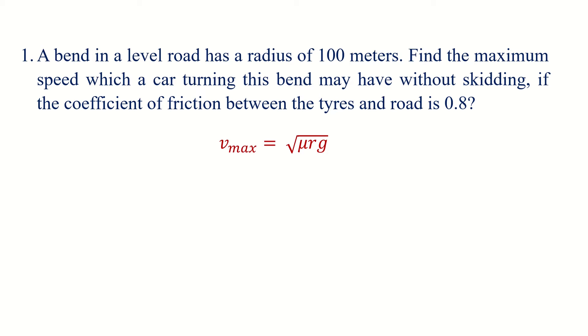So Vmax equals root mu rg, where mu is the coefficient of friction between tyres and road, r is radius, and g is acceleration due to gravity. Vmax equals root of 0.8 times 100 times 9.8, which equals root 784, equals 28 meters per second. This is the safest velocity without skidding. Velocity should always be less than 28.